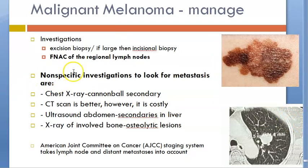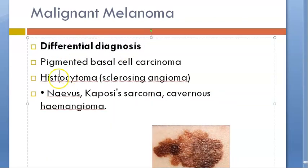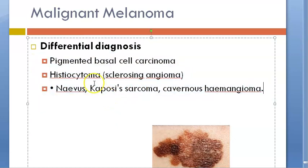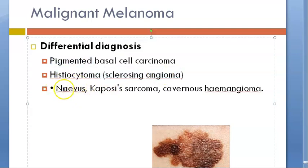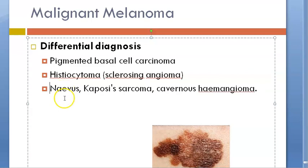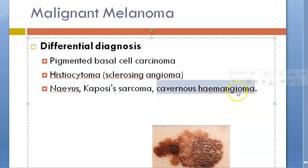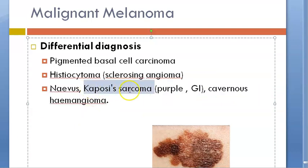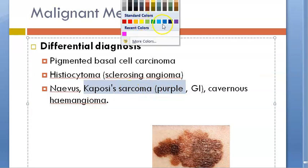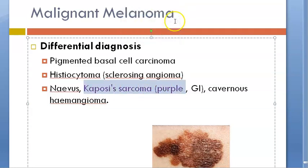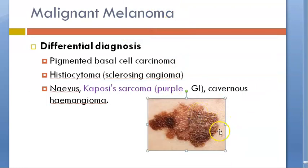Now let us look at the differential diagnosis. You should be able to differentiate malignant melanoma from pigmented basal cell carcinoma, histiocytoma, a normal nevus, Kaposi sarcoma — usually purple — and cavernous hemangioma, which would be more red.